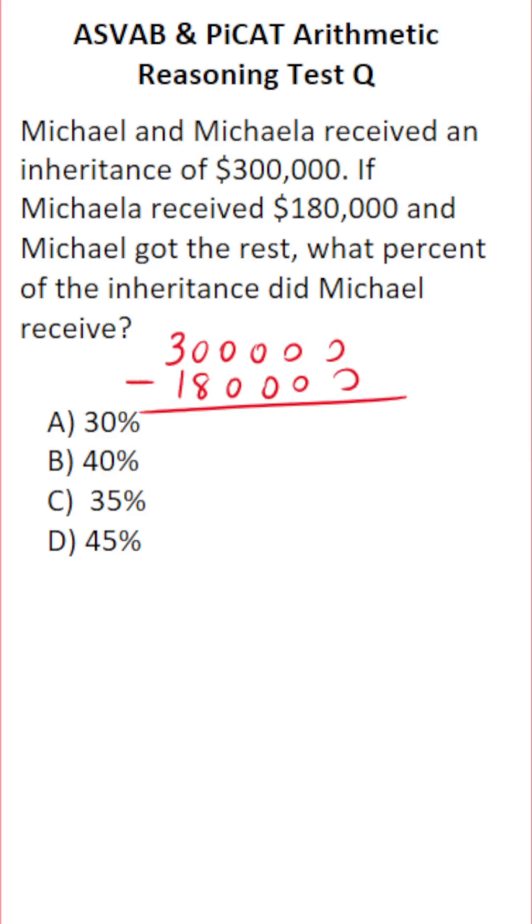Let's do this subtraction. 0 minus 8 we can't do, so this becomes 2, this becomes 10. 10 minus 8 is 2. 2 minus 1 is 1. So Michael got $120,000.